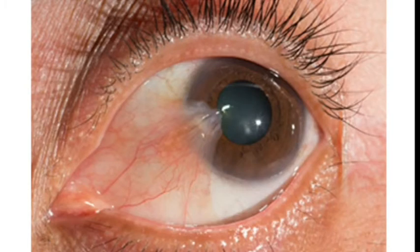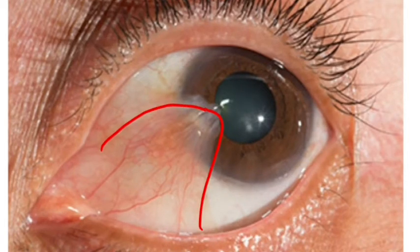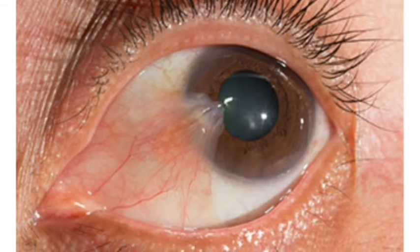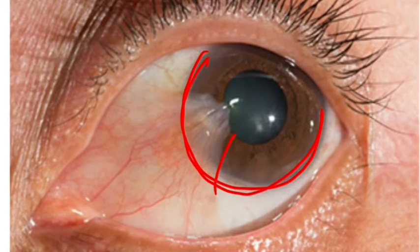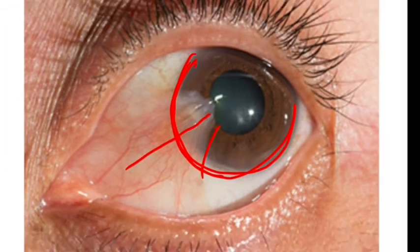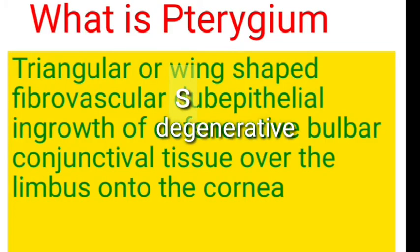As you can see in this picture, this is the bulbar conjunctiva. There is a fold of bulbar conjunctival tissue which is crossing the limbus and then growing over the cornea — a degeneration of subepithelial tissue encroaching onto the cornea. The main barrier here is the limbal stem cells, which prevent growth of conjunctival epithelial tissue over the cornea. Whenever limbal stem cells are damaged, conjunctival tissue grows onto the cornea. By definition, pterygium is a triangular or wing-shaped fibrovascular subepithelial ingrowth of degenerative bulbar conjunctiva crossing the limbus and moving onto the cornea.